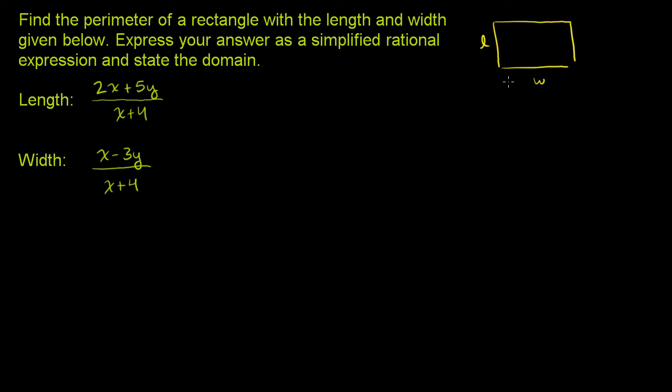The perimeter of this rectangle is going to be the width plus the length times 2, because you have two widths and two lengths. So you could view that as w + w + l + l, which is the same thing as 2w + 2l, which is the same thing as 2 times the width plus the length.